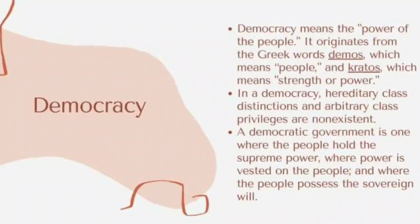A democratic government is one where the people hold the supreme power, where power is vested in the people, and where the people possess the sovereign will. As stated, we, the people, hold the power under democracy.